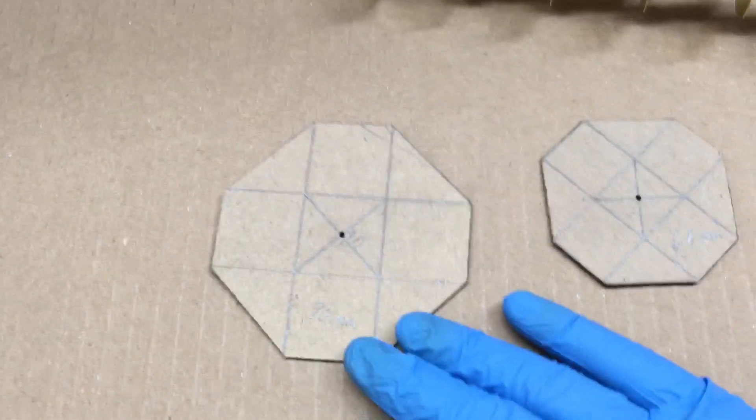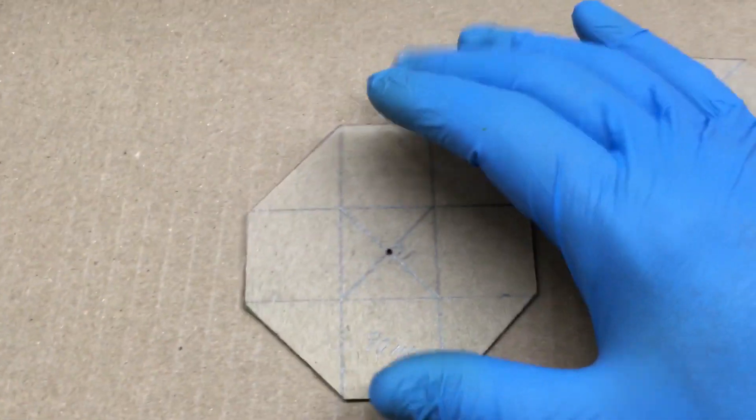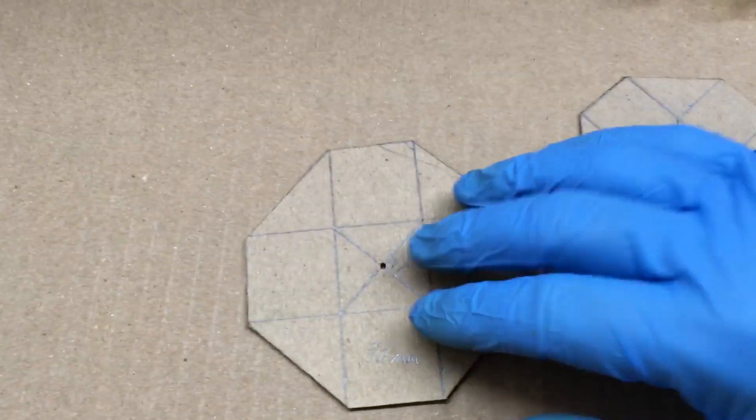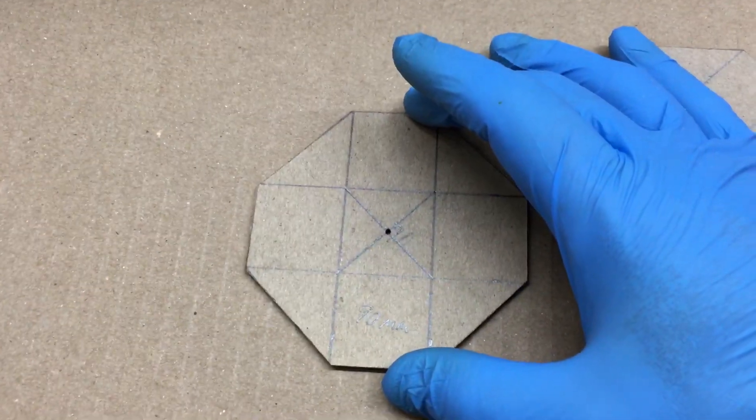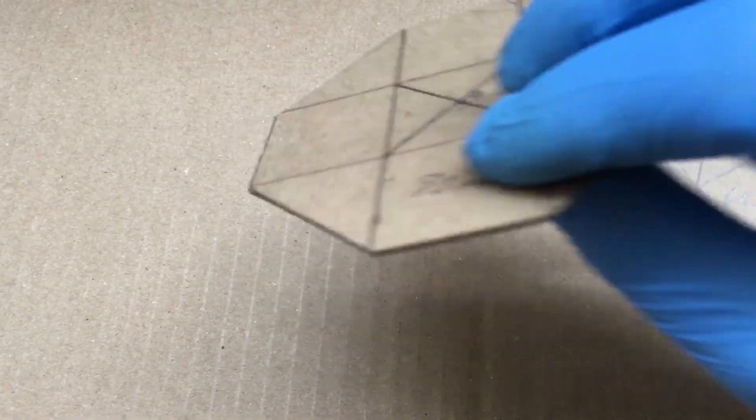I cut all these out by hand. To get the octagon shape I made a square, a 90 millimeter square, on a piece of stiff cardboard here.